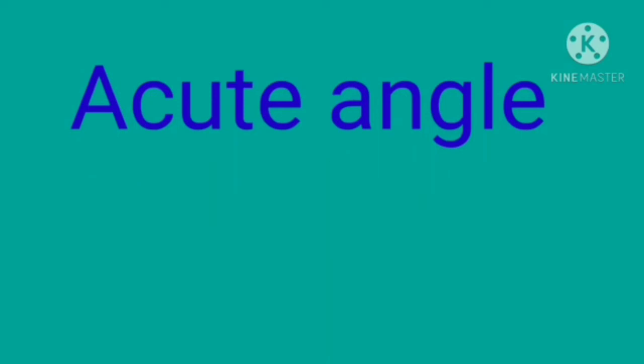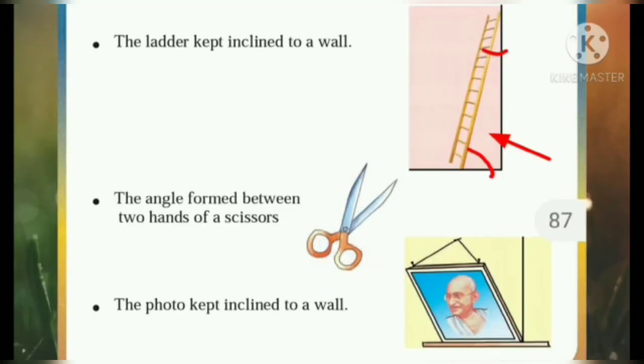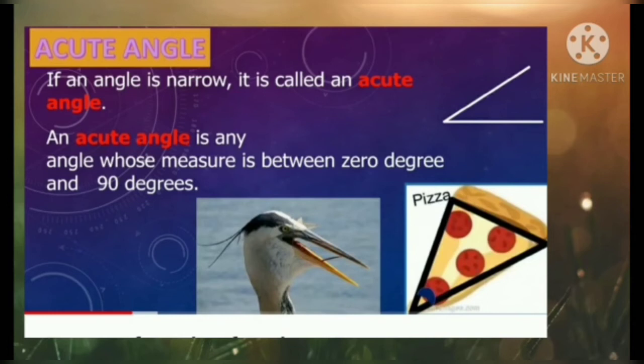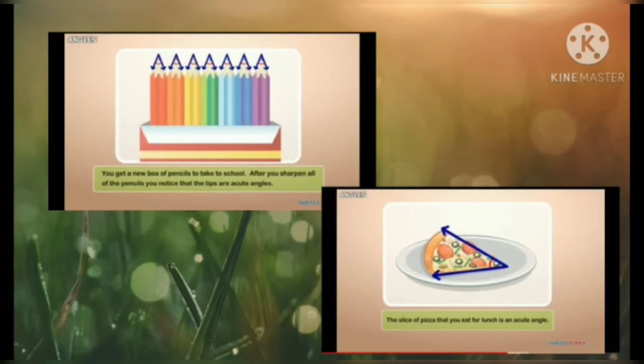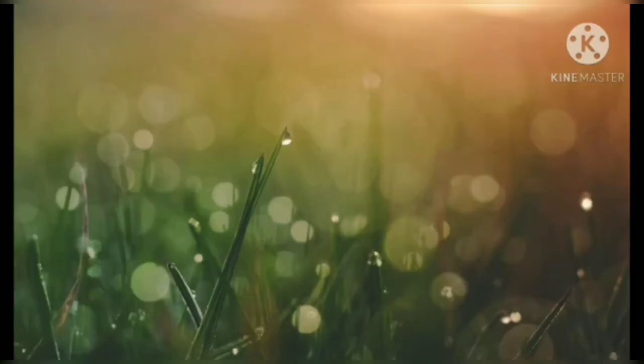So in our daily life, we can see many objects forming an acute angle. For example, the ladder kept inclined to a wall, angle formed between two ends of a scissor, the photo kept inclined to a wall. In all this, we can see an acute angle. A nip of a pencil and slice of the pizza. In these, we can see the acute angles.